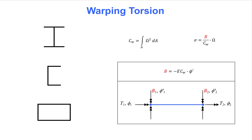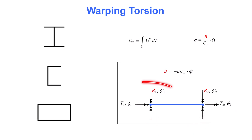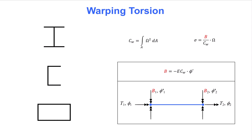Notice from the expression for B that the bi-moment and phi prime are indeed directly related. Also remember that an ordinary beam element in bending has two degrees of freedom at each end: one is the displacement, and the other is the derivative of the displacement, which we call rotation. We notice how the template for warping torsion is similar to beam bending, in the sense that phi and the derivative of phi are the degrees of freedom at each end of the element. In short, carrying out a computational structural analysis with this element is another way to obtain the bi-moment needed for the calculation of stress.